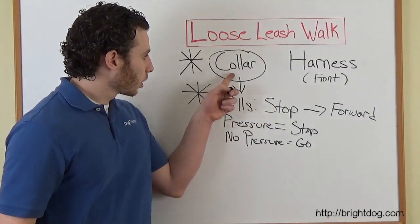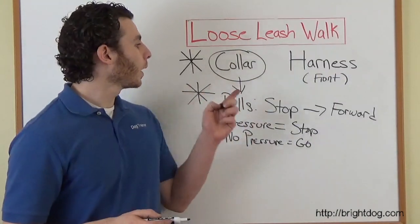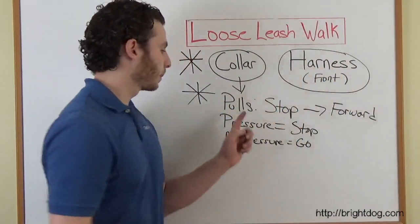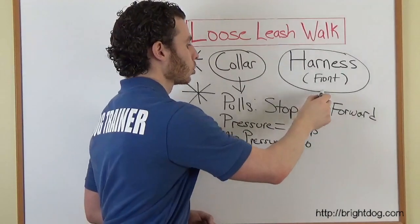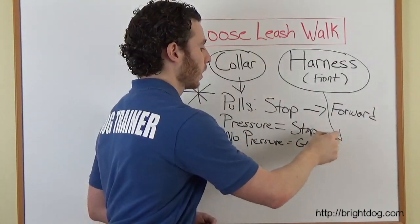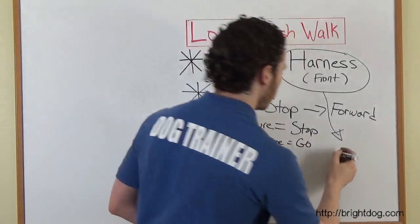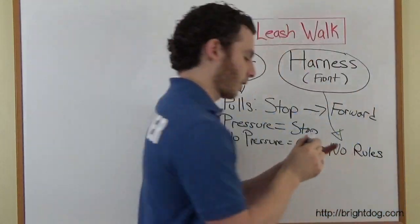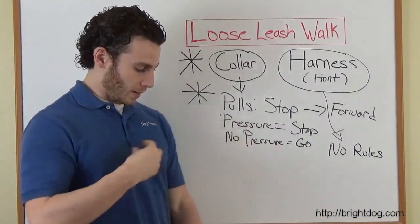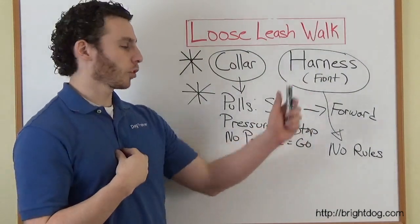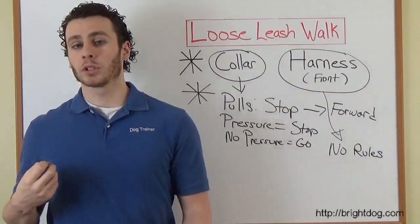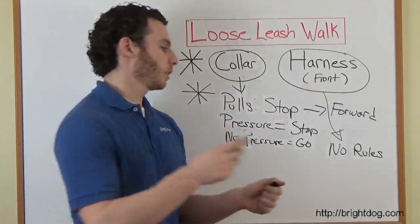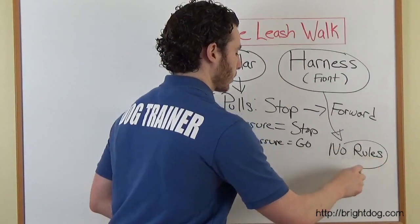Now, you do this on the collar as much as possible. So why do we need the harness then? Well, there's times where you're not going to be able to do stop, go, stop, go. So the harness is what you're going to switch the dog to. And when they're on the harness, there are no rules. You don't do stop, go on the harness. Because now that they're on the harness, the pressure is different. Now the pressure is on their chest. And because you have a front attached harness, they're not going to be able to pull anyways. Like I said in the beginning, the harness doesn't teach them not to pull. It just doesn't allow them to practice pulling.